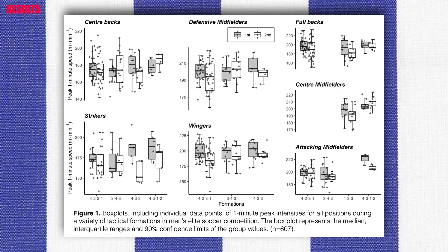Regarding peak demands, wingers and strikers both had greater outputs in the first half than the second half in the 4-3-3 and 4-2-3-1 formations. Furthermore, in the 4-3-3 formation, center backs demonstrated greater intensities across all moving averages in the first half compared to the second half.